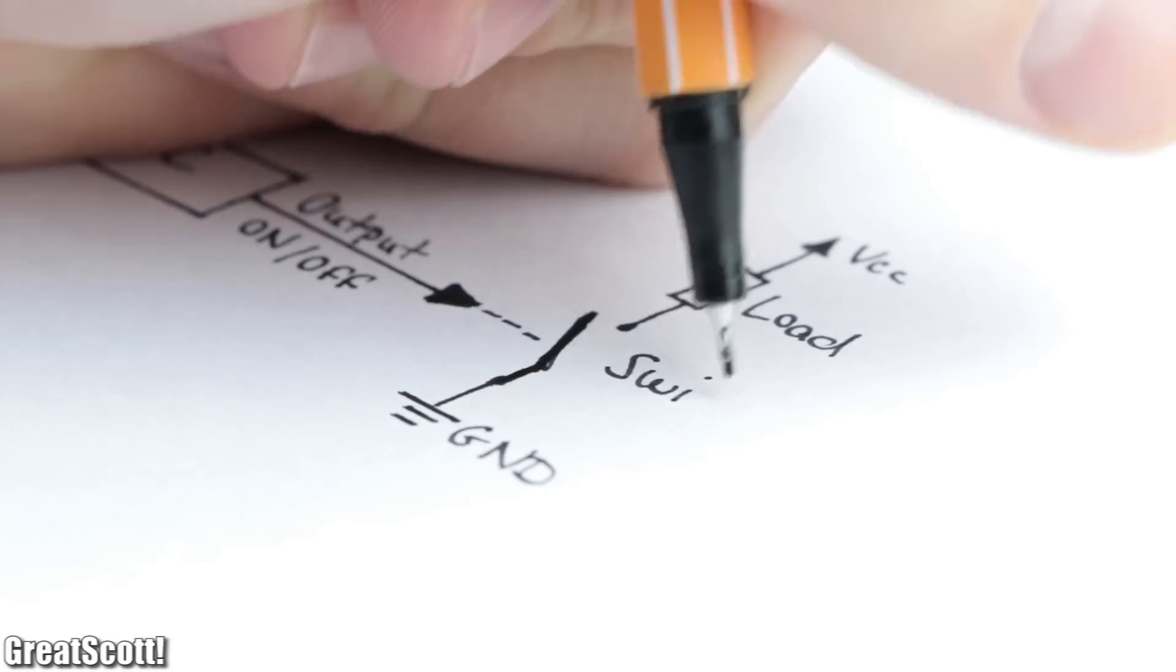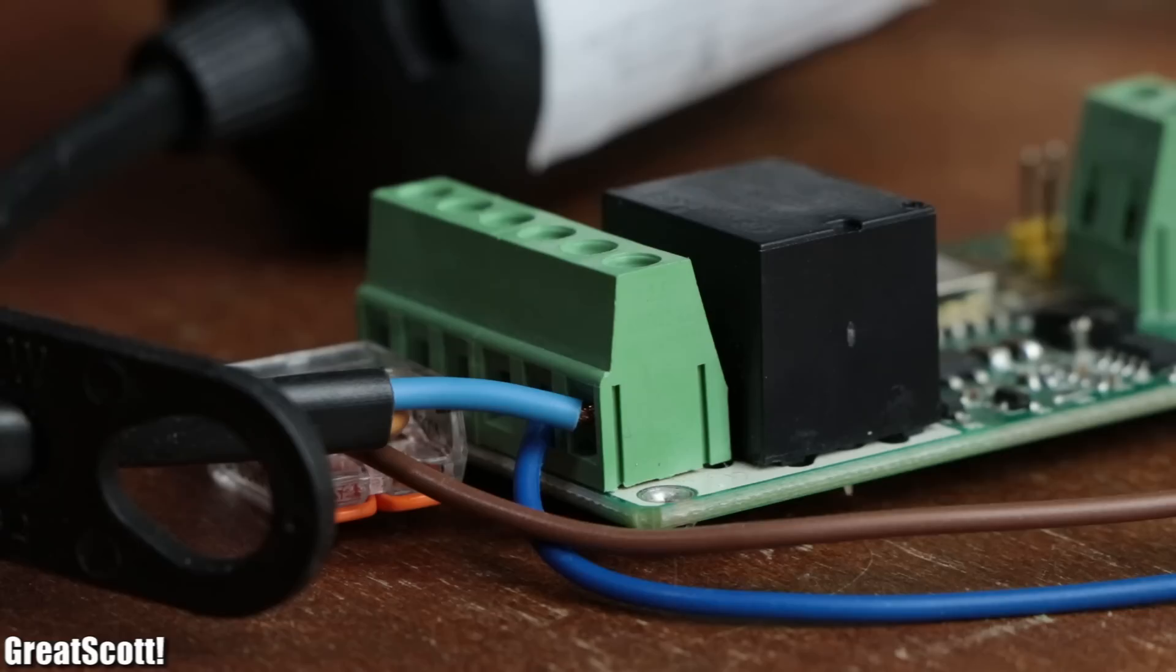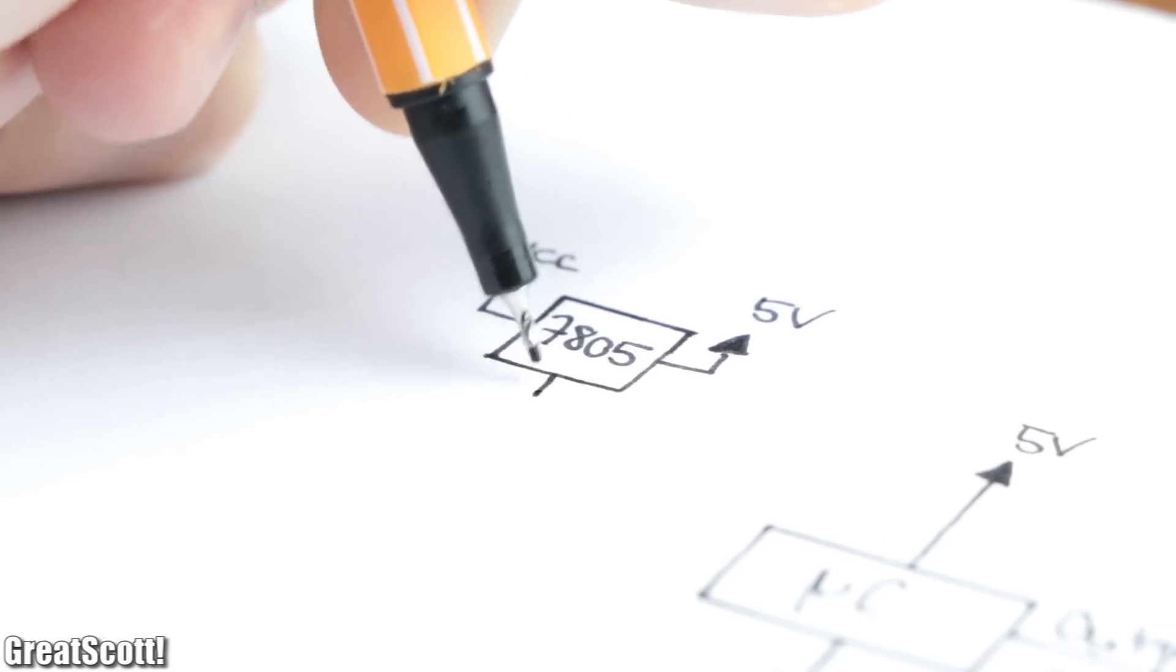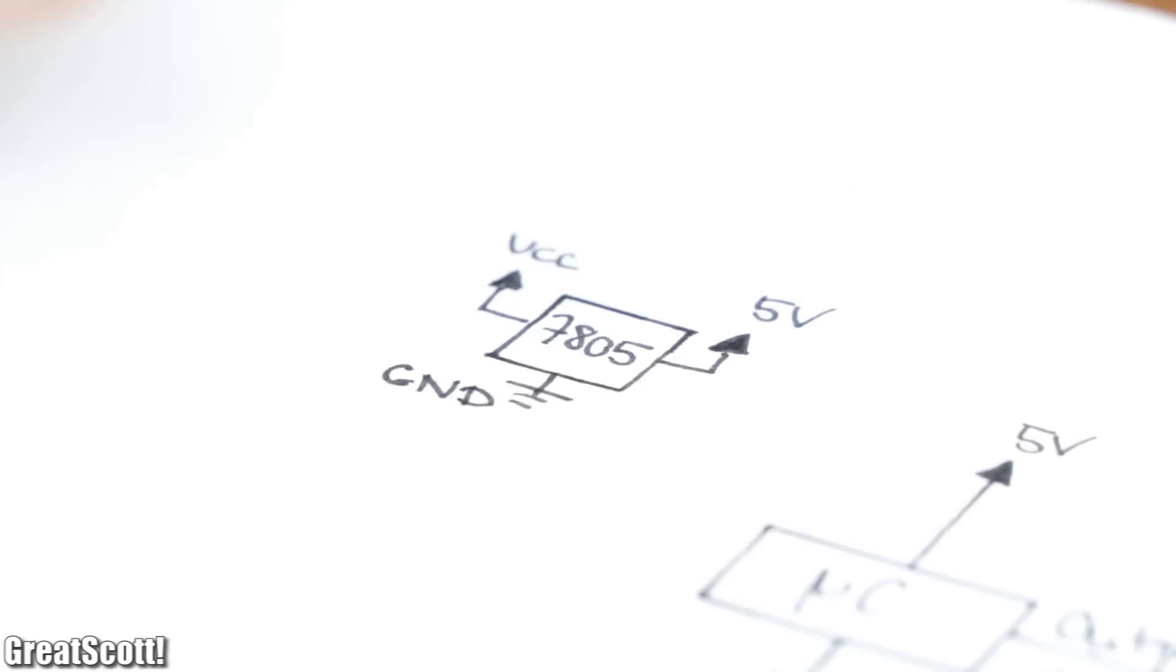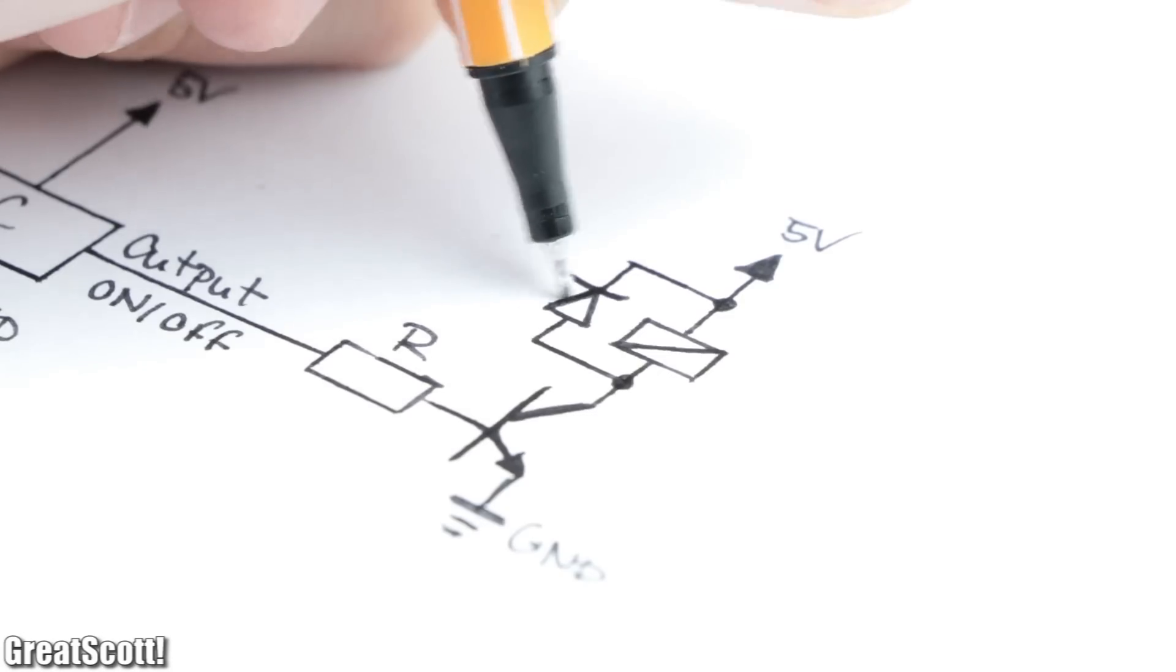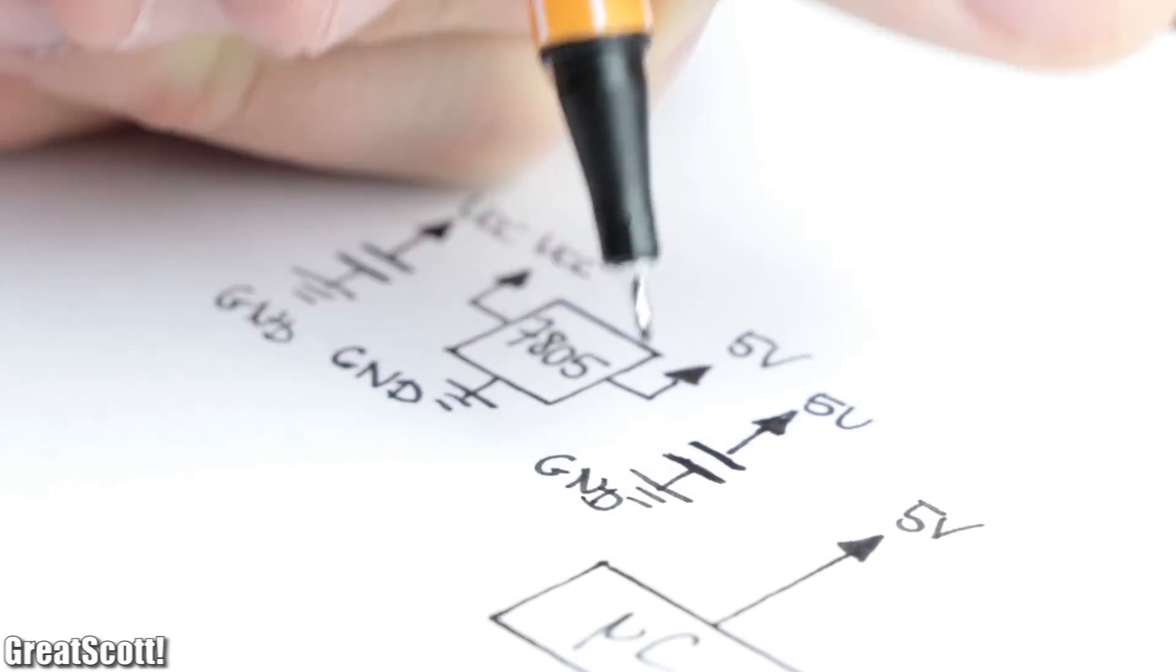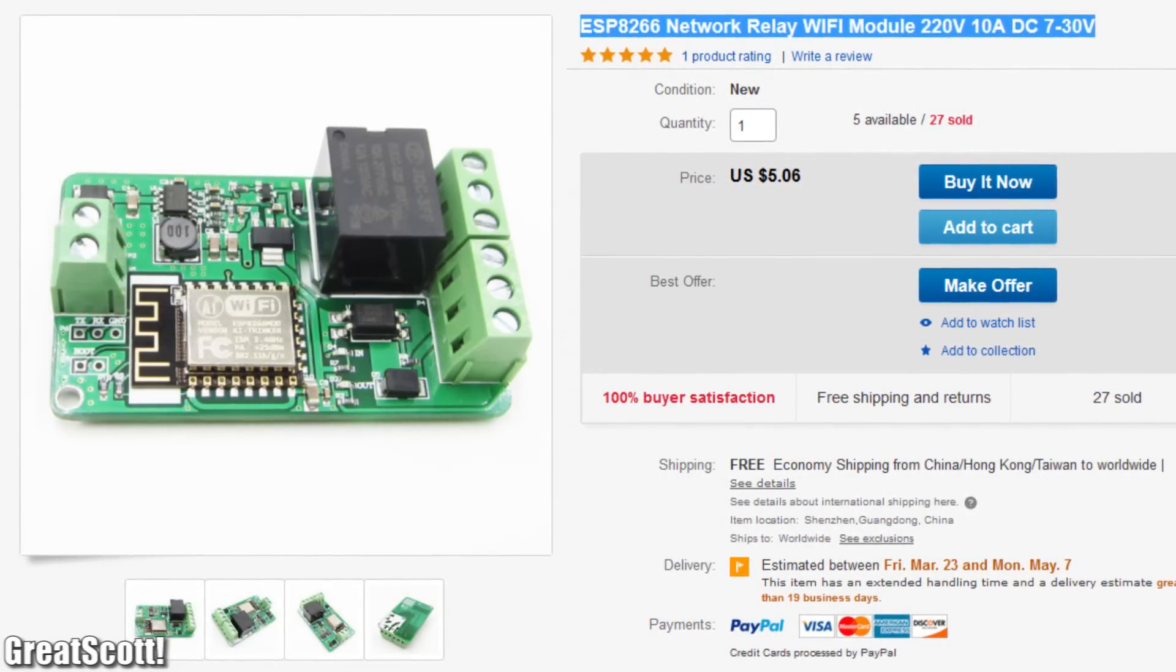Additionally, we need an electrically controllable switch, which should be some kind of relay because I want to later switch mains voltage with it. And while we're at it, we should probably add a voltage regulator circuit for the microcontroller and a transistor with flyback diode for the relay. But before I overcomplicate this project too much, let's rather order one of those ESP8266 relay boards.